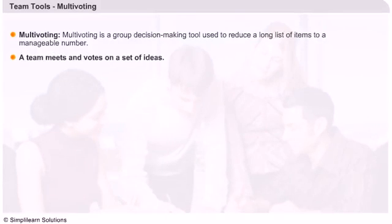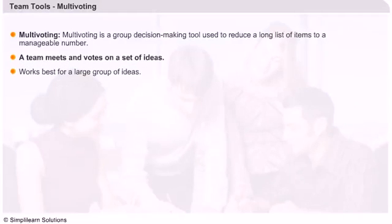In simple words, a team meets and votes. Multi-voting works best when you have a large number of ideas and you wish to arrive at a group consensus on which idea is the best. Let's look at the steps involved in multi-voting. We start by generating a list of items and numbering each one of them for identifying.